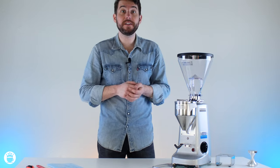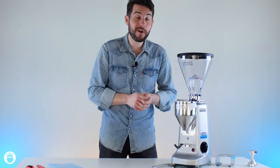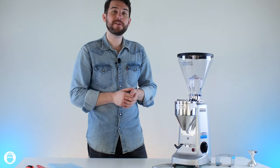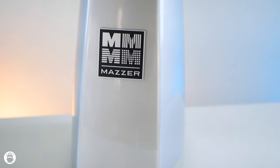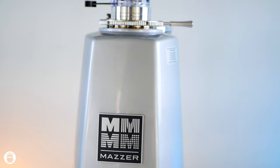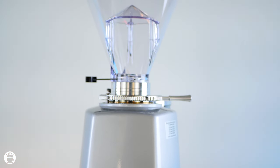So as stated, this grinder has awesome 64 millimeter flat steel burrs running a 350 watt motor, so packs a lot of power. And then it goes about 1600 RPMs, which means about 10 seconds for a double shot of espresso. This grinder has a really solid build quality, a really sleek design that will look nice on your counter.